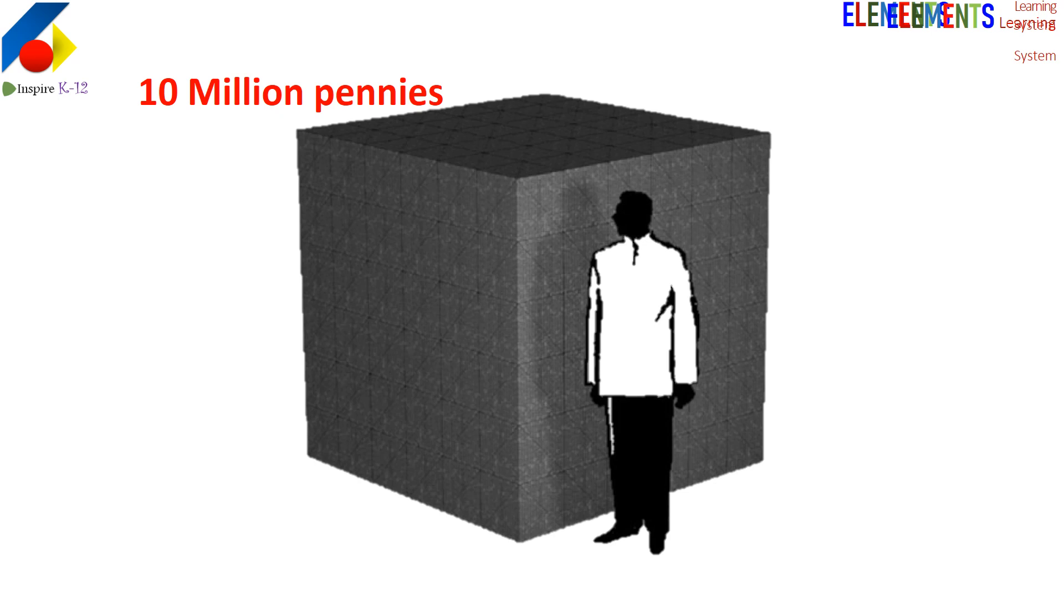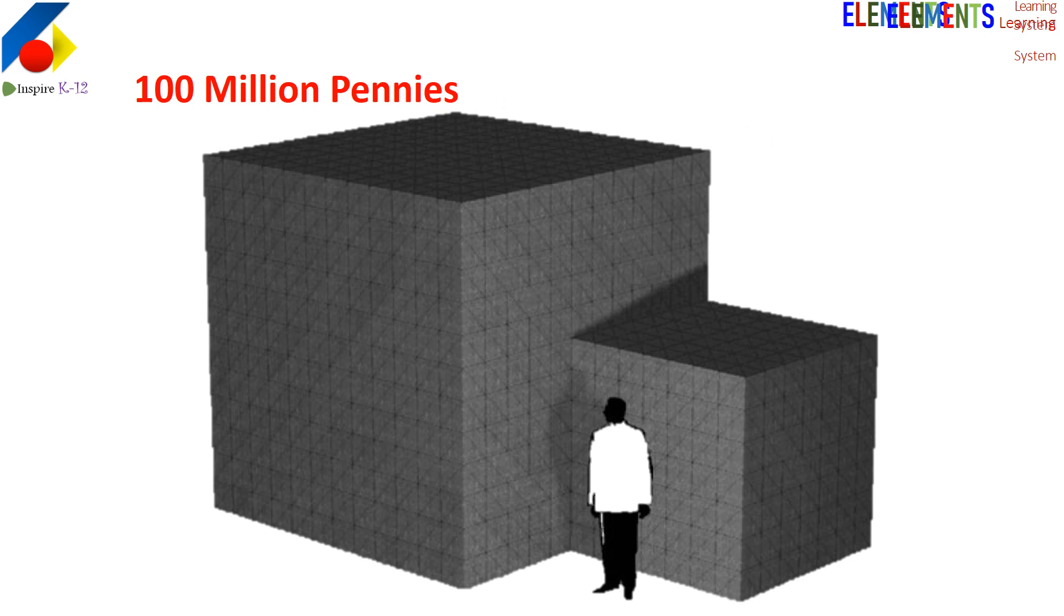This is how one million pennies would look like. Compare it with the size of an adult man. This is how ten million pennies would look like, and a hundred million. That's as big as a small apartment - you can house a man in that.